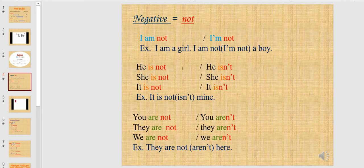Here we have he is not, and the short form is he isn't. He is not. He isn't. She is not. She isn't. It is not. It isn't. For example, if I want to answer a question — is this book yours? Is it yours? I will say no, it is not mine. It isn't mine. It is not mine or it isn't mine.